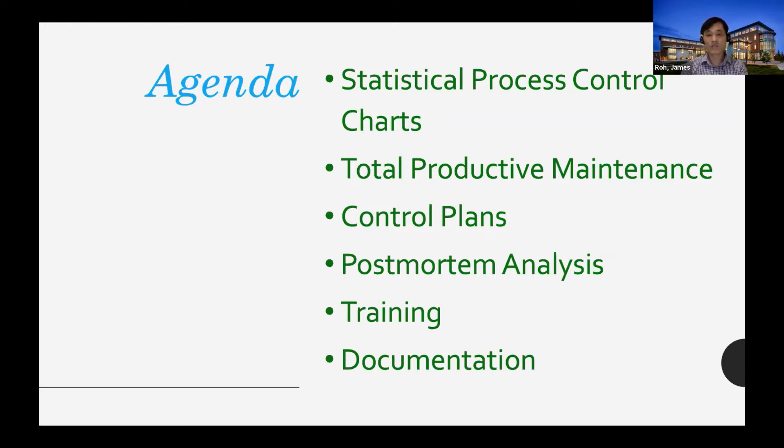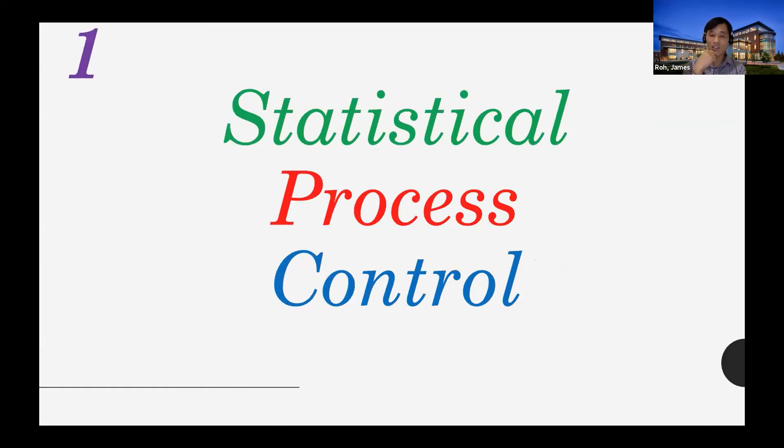Let me briefly go through statistical process control charts and then control plans and documentation, and then conclude this lecture. Statistical process control charts—if you've taken operations management you've learned that this is a tool to visualize the process. Right now you don't know how much time you have to wait to process one product or serve a patient. That is unclear, and you don't know how efficient this person is or what kind of quality that person has.